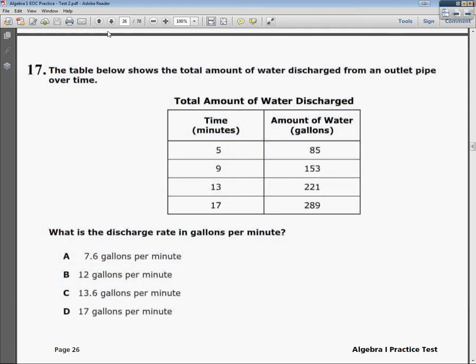This is the Algebra 1 End of Course Practice Test 2, question number 17. The question says the table below shows the total amount of water discharged from an outlet pipe. And they give you a nice little table there.